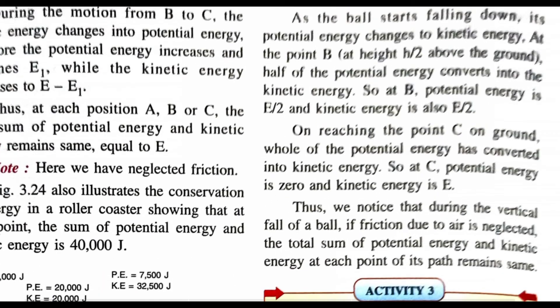Thus, during the vertical fall of a ball, if friction due to air is neglected, the total sum of potential energy and kinetic energy remains the same at every point.